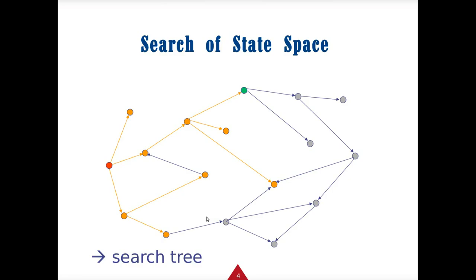In a state space we have the initial state, and each step goes to different states. In a maze, each little block or each step you could go would be a separate state. We then build nodes on top of those, where you can go to successor ones.